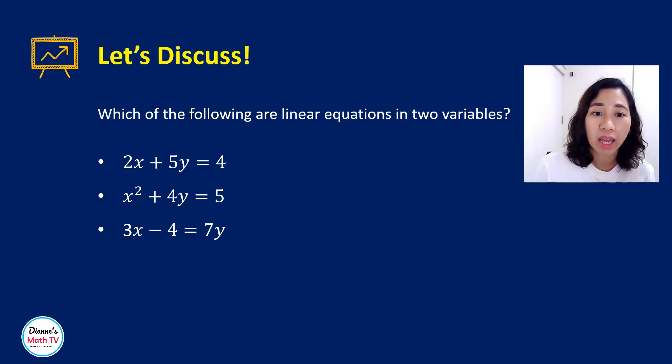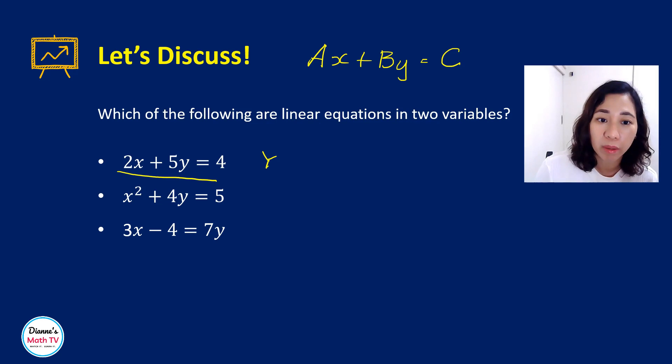So remember that, what is our linear equation? The form, it should always be of this form, Ax plus By is equal to C. Now, obviously, for the first one, this is linear equation in two variables, correct?